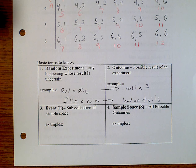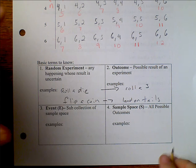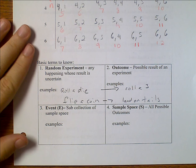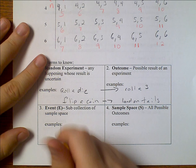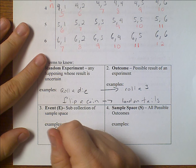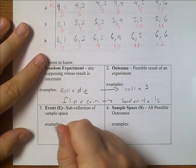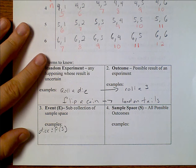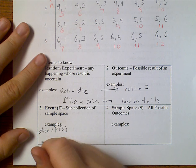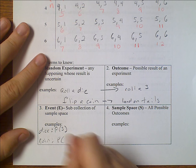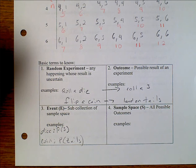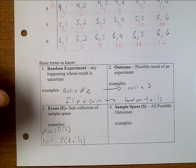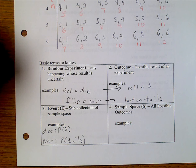An event is a sub-collection of the sample space. So I may say the probability of rolling a three on my dice, or I can say for a coin, the probability of tails. So three, that's an event. Tails, that's another event.